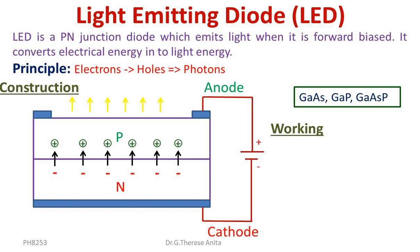As you know, the electron that moved from the N region to the P region is in the conduction band — its energy level is high compared to the valence band. When the electron recombines with a hole, it transitions from conduction band energy to valence band energy, and the extra energy is released in the form of light.